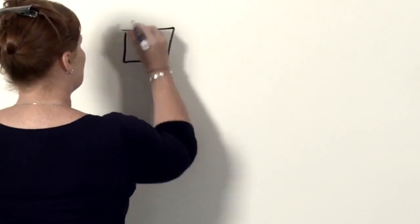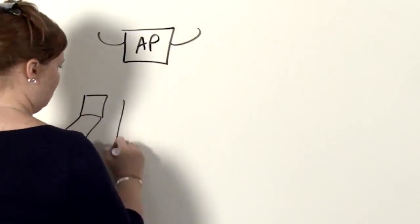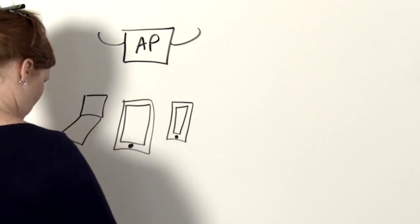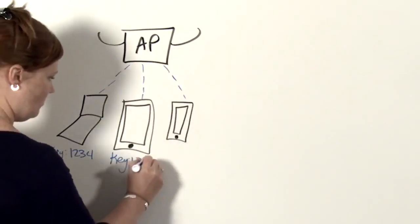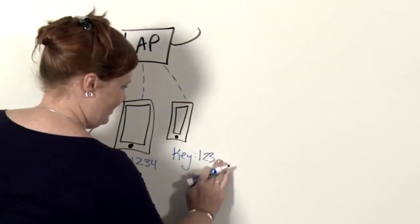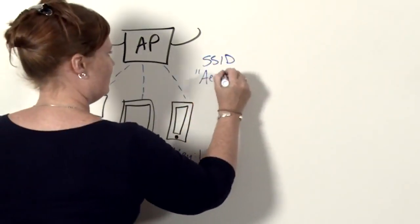So the most common way for connecting devices to an SSID is using a pre-shared key. And this is the method where every device that you're connecting to the network is given the same key, and they all connect to the SSID using that same key.